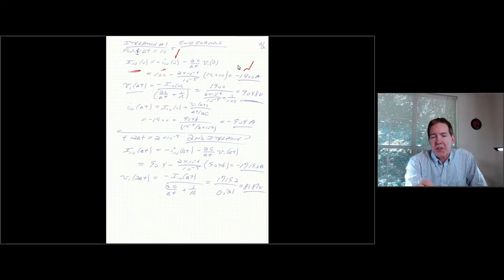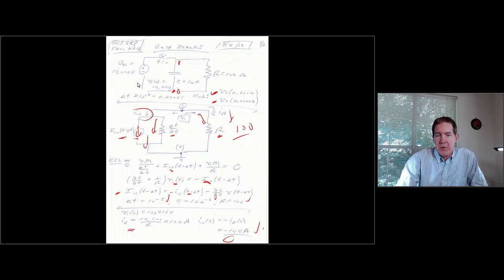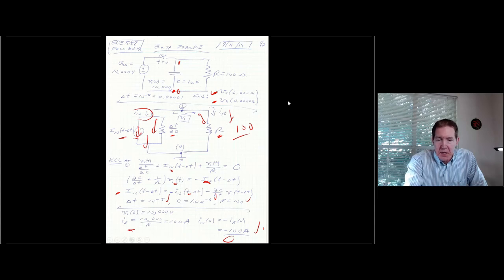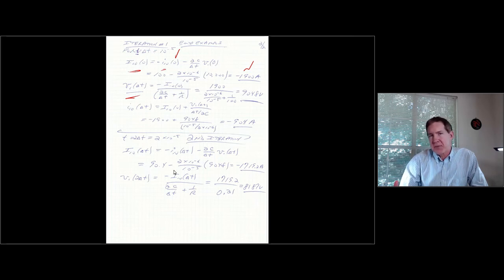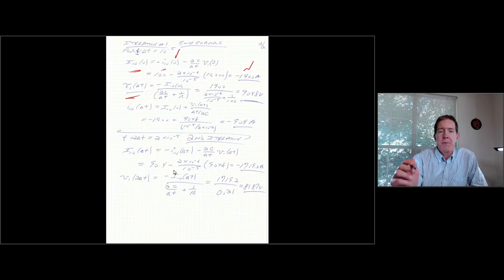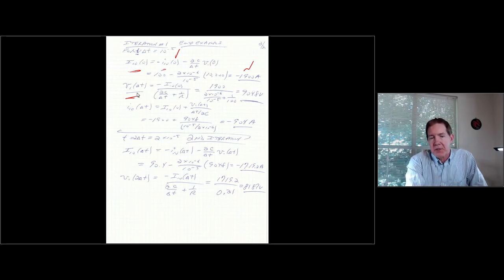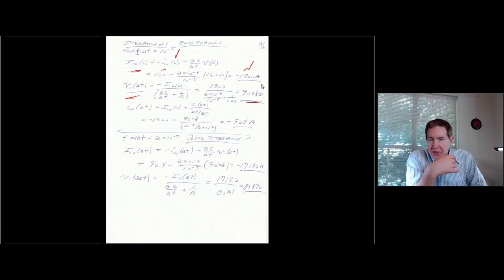So then once you have the history term, then I can calculate V1. V1 at delta T basically from using this formula. We're not messing around with matrices in this case. I'm just solving for one voltage in this situation. So anyway, V1 at time delta T for the next update is minus the history term at time 0 divided by 2C times delta T plus 1 over R. So you can see that this is kind of the form of V is equal to I divided by admittance. And this is going to be equal to 1,900 divided by this term in the denominator, which is going to give us 9,048. So anyway, this is the first update.